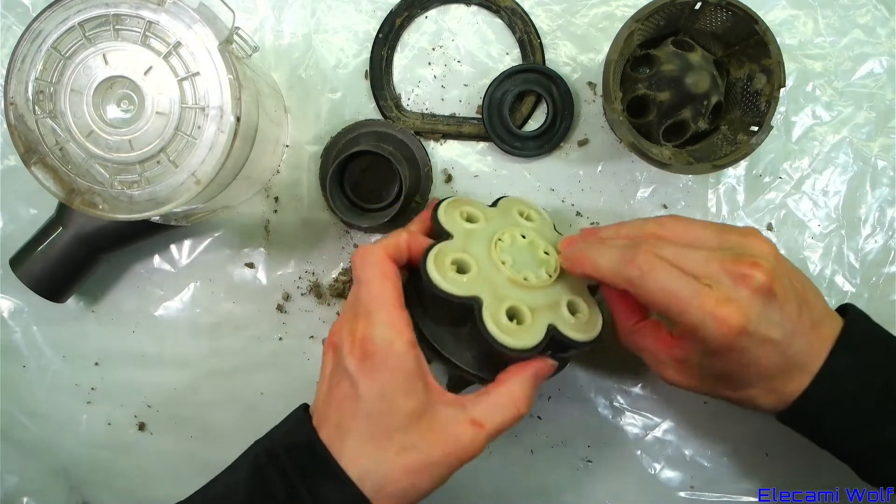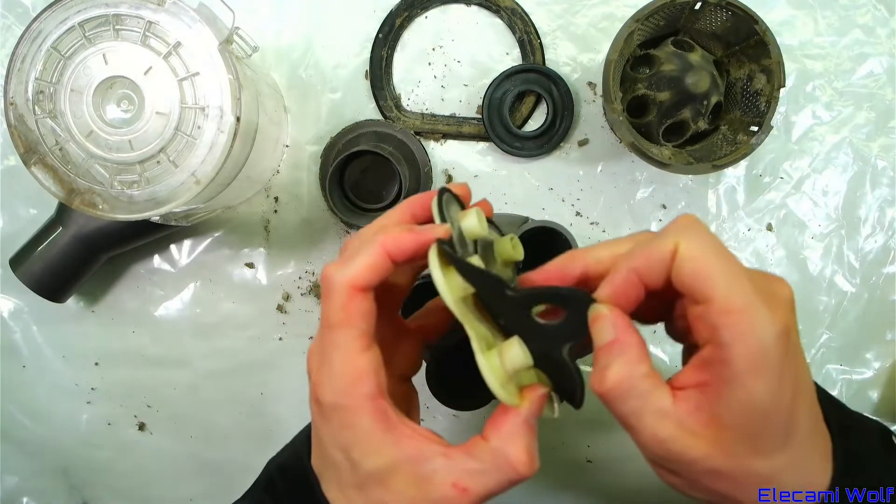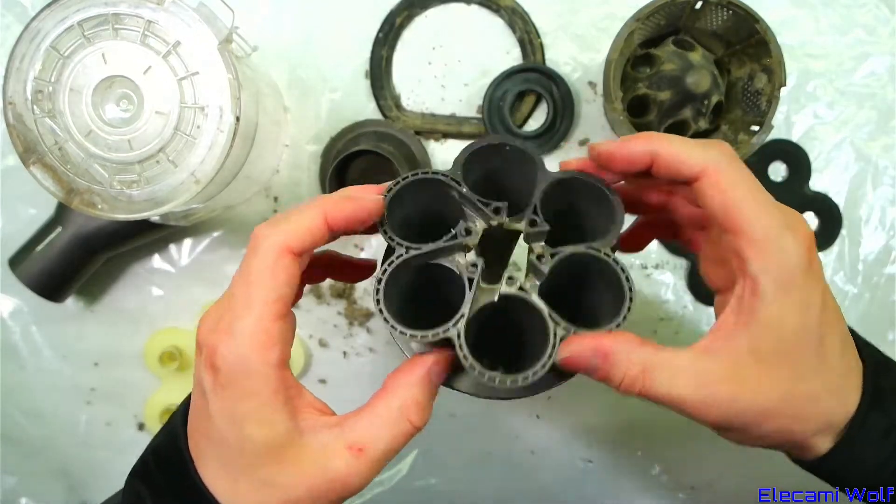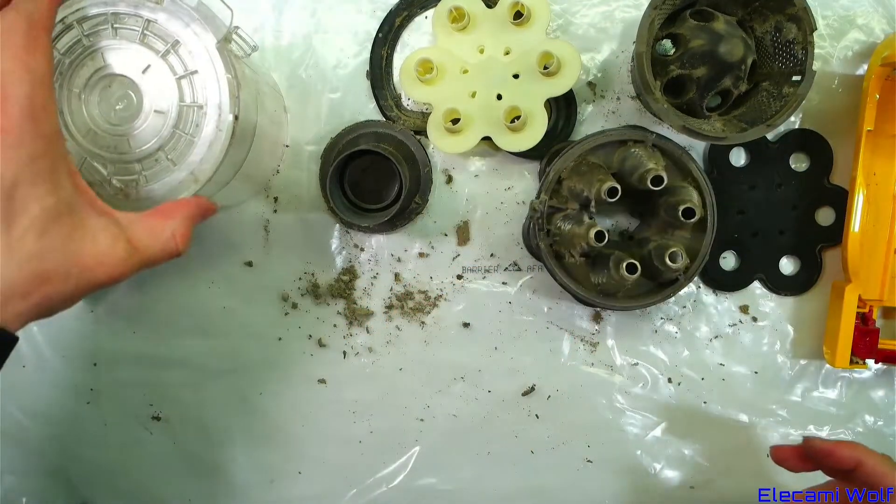Now this top part comes off. And there's a seal there that can get cleaned. And it's filled up with dust that's all broken down. Everything can be washed and scrubbed to make it nice and clean.